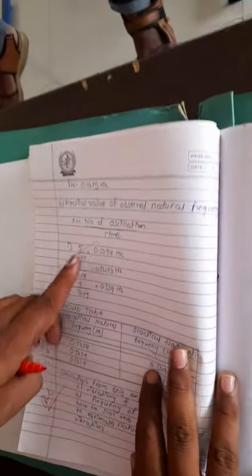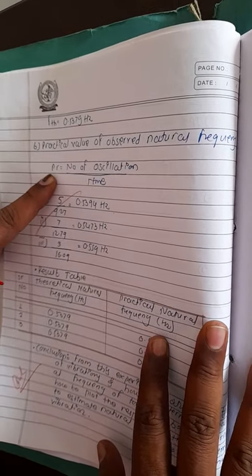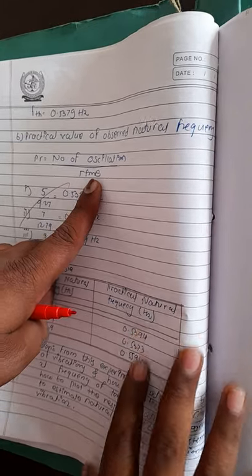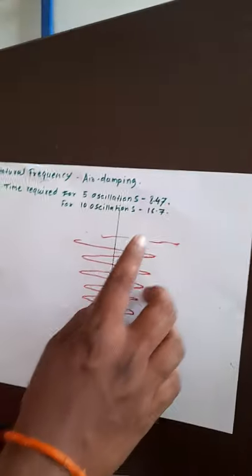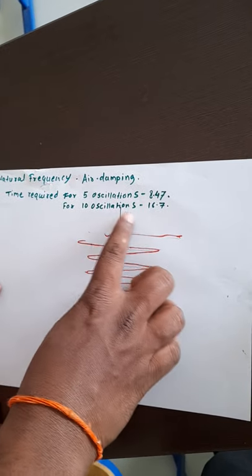Then we have to calculate the natural frequency practically with the help of this formula. Practical natural frequency equals number of oscillations divided by time required for that oscillation. So we will get for 5 oscillations we get a time here 8.47 seconds.